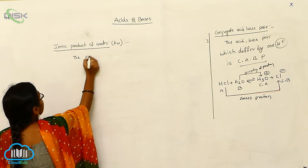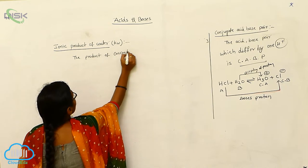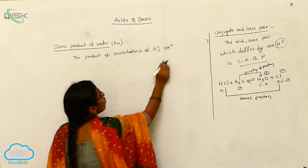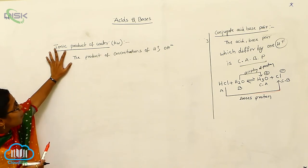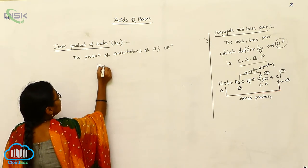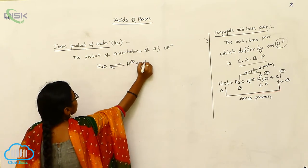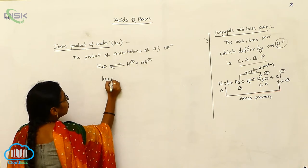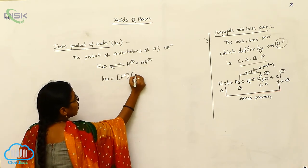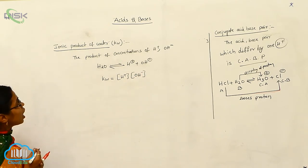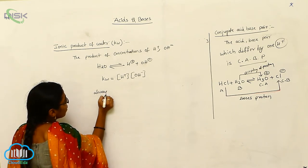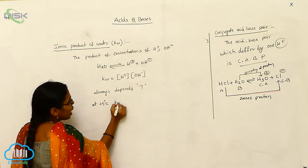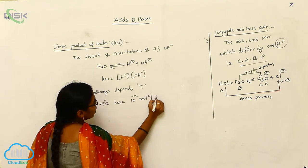The definition of ionic product of water is: the product of the concentration of H plus ion and the concentration of OH minus ion. That is called the ionic product of water. For water in equilibrium, we can write H2O dissociating into H plus and OH minus. KW equals the concentration of H plus ion multiplied by the concentration of OH minus ion. The ionic product of water always depends upon temperature.